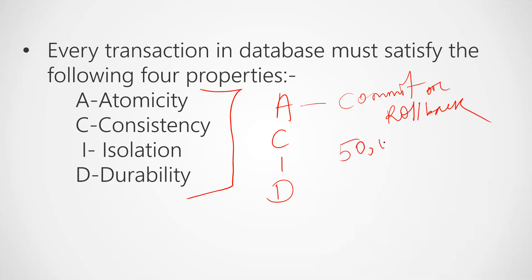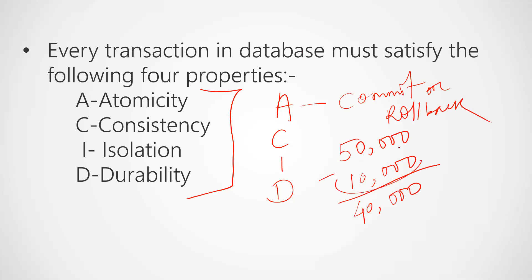For example, suppose your account has $50,000. If you withdraw $10,000 and the transaction is successful, then you will have $40,000. But if the transaction is not successful, then your account must go back to $50,000. The transaction must either complete fully or revert entirely.